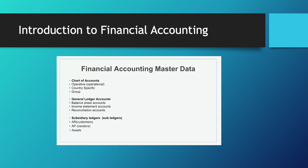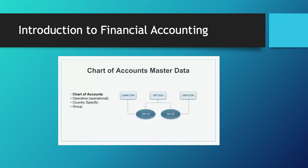Let's take a look at charts of account and general ledger accounts. A chart of accounts, or COA, can be used as a company's general ledger. There are three types of COA: operative, country-specific, and group. The operative COA usually records the daily or day-to-day transactions and is the primary COA created by the organization.